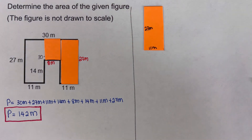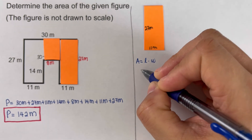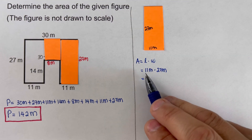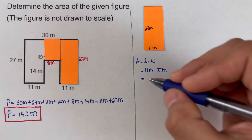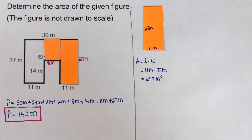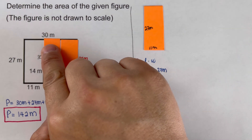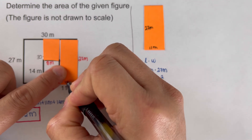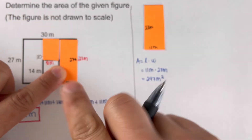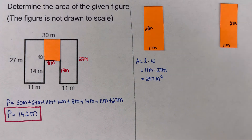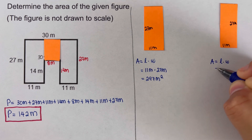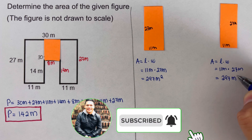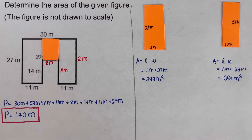Area equals length times width, so for the first rectangle: 11 meters times 27 meters equals 297 meters squared. The third rectangle has the same dimensions — 11 meters times 27 meters — also giving 297 meters squared.